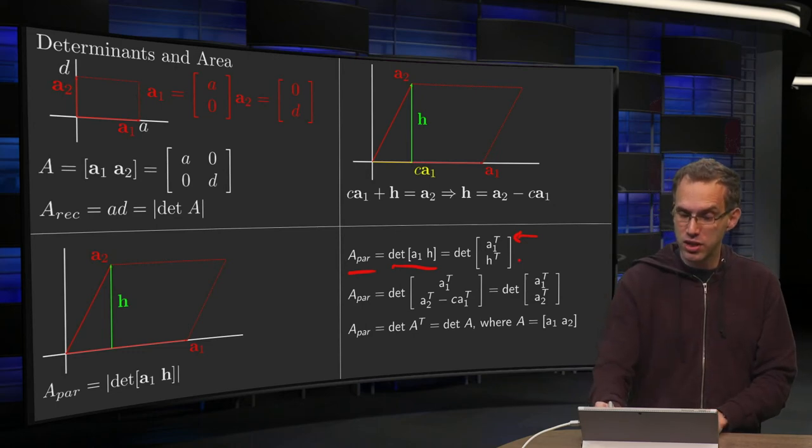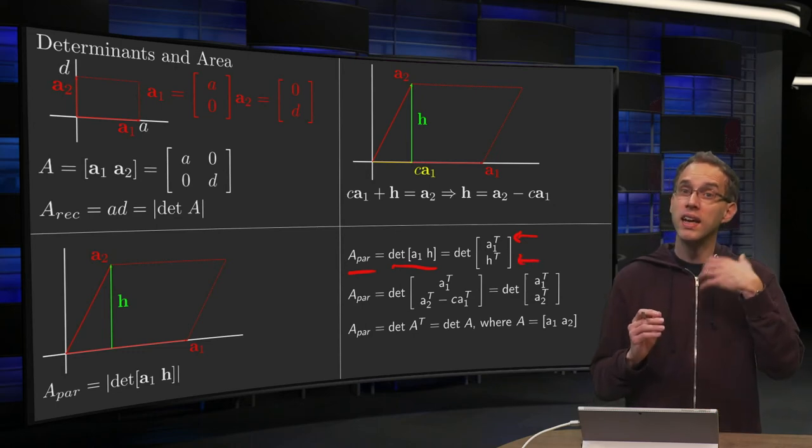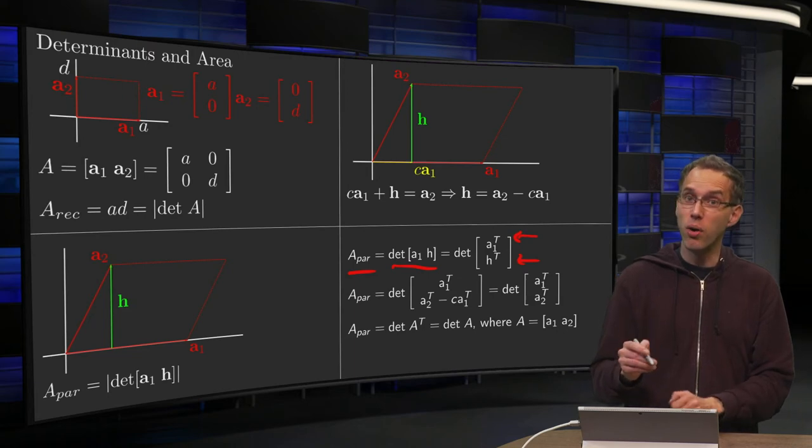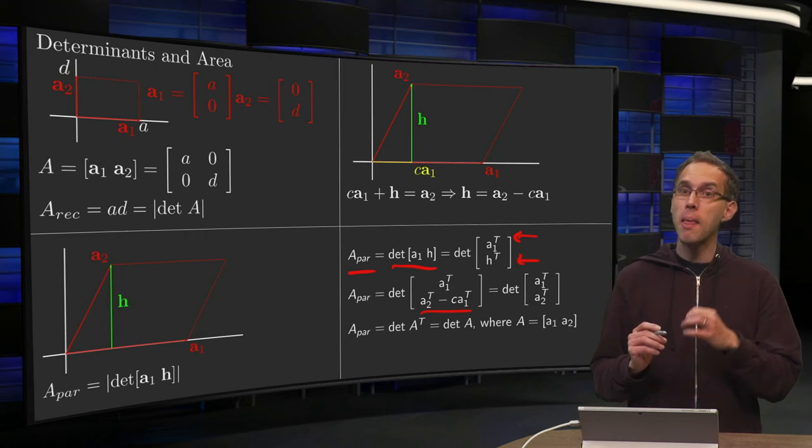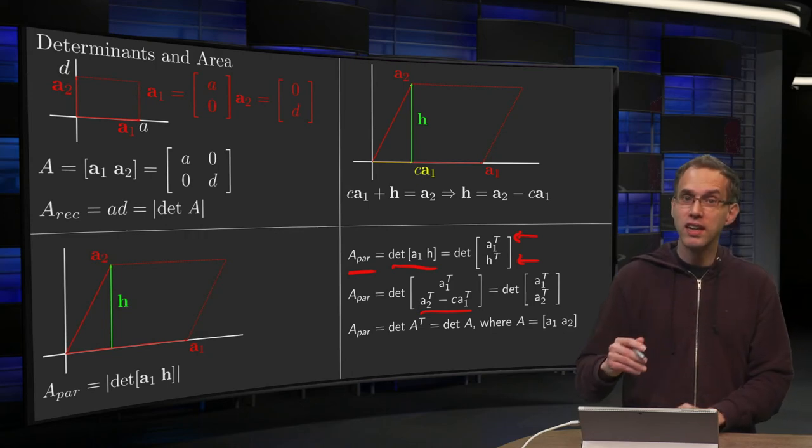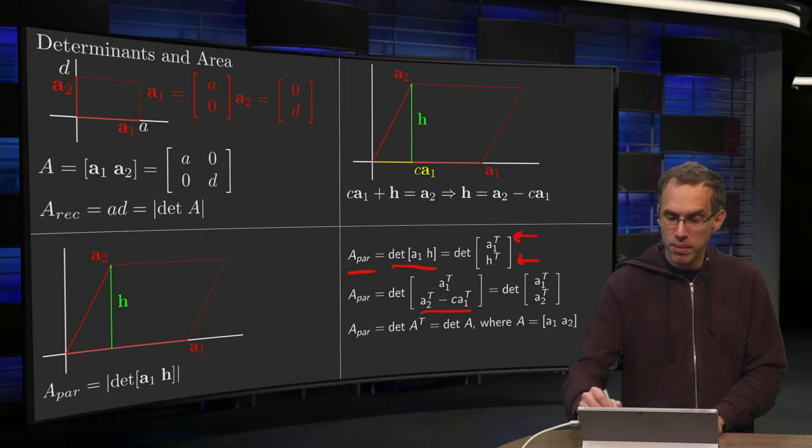Now we can substitute what you know about h. h was a₂ minus c times a₁. And now we can do the trick: we can do a row reduction step. We can add c times the first row to the second row.